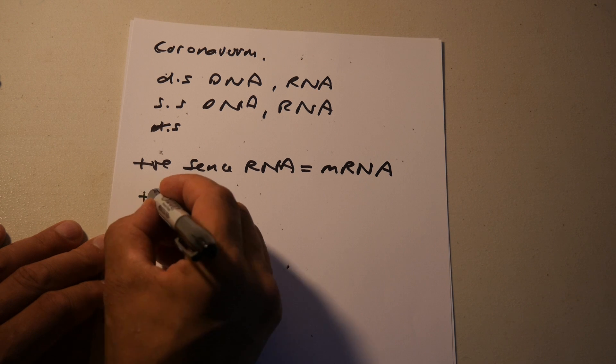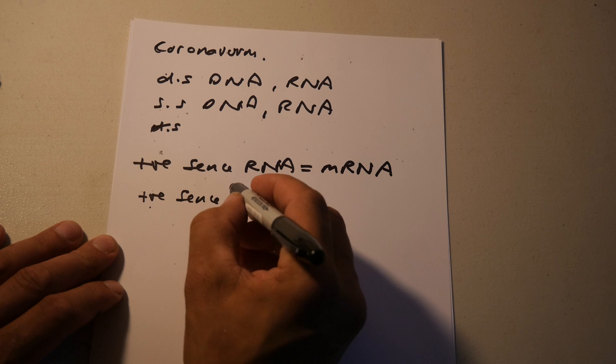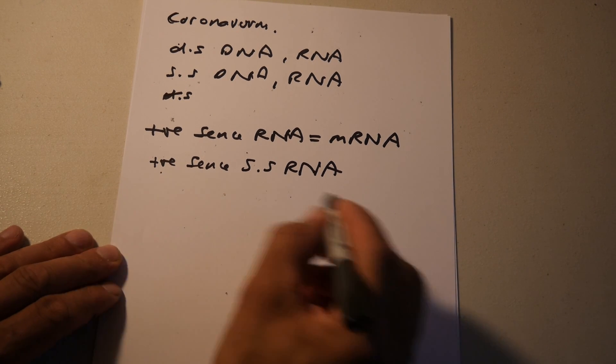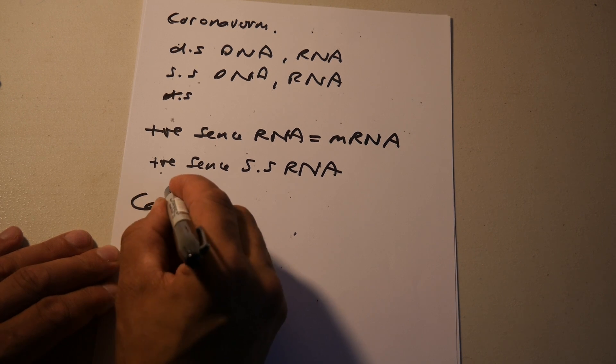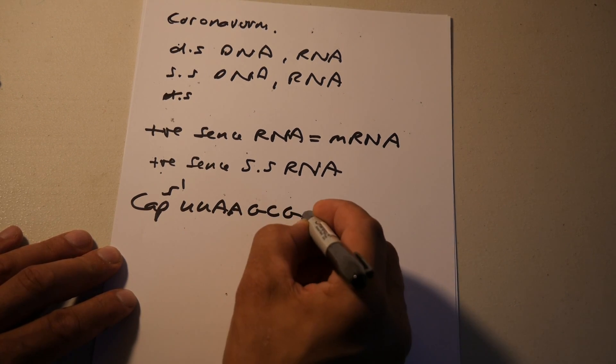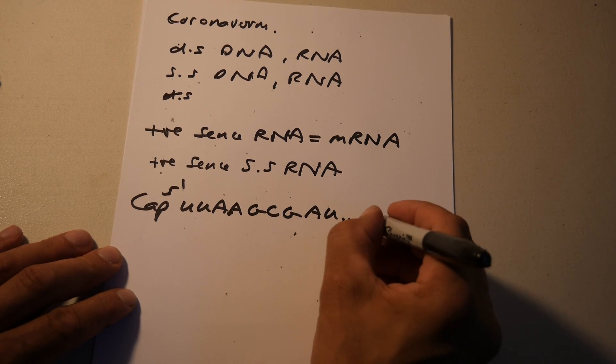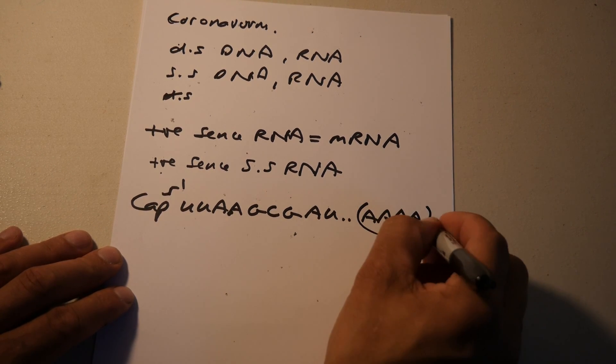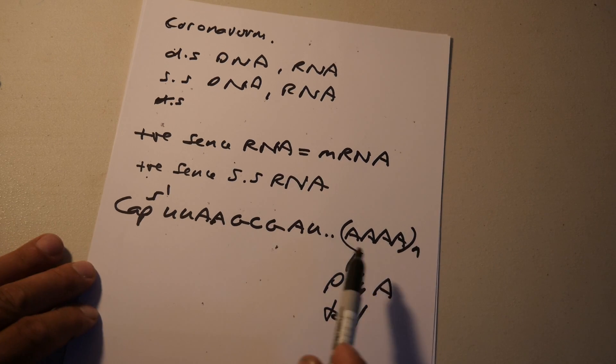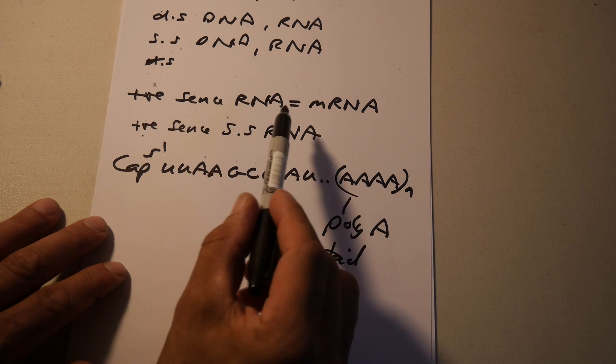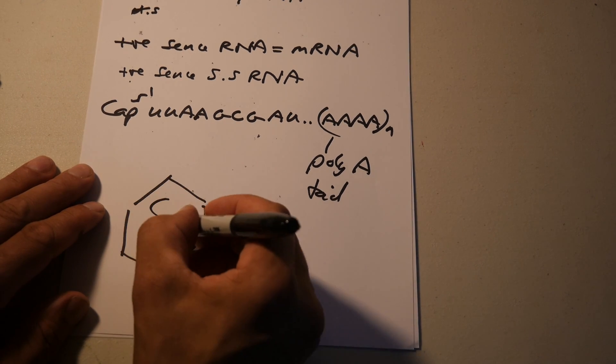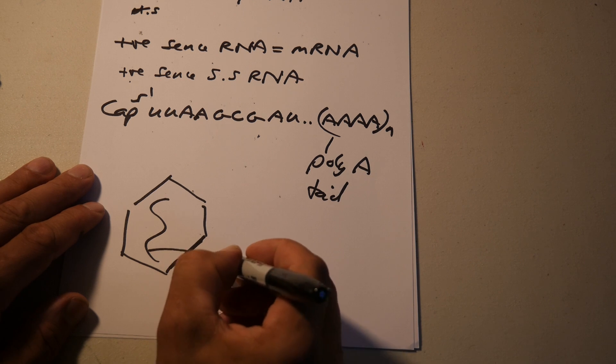It has a positive sense single-stranded RNA. So it's just a virus that contains a single strand. It's got a cap at one end, a 5' cap, followed by U, U, A, A, G, G, C, G, A, and finishes off with what you call a poly-A tail. So one end is something called a cap, the other end is a poly-A tail, lots of adenines. So it just means the virus contains a single messenger RNA.